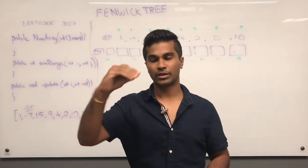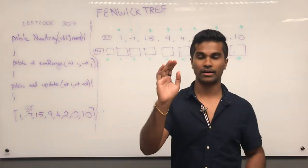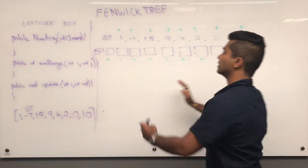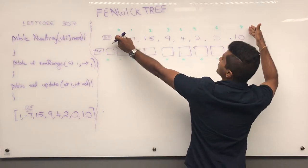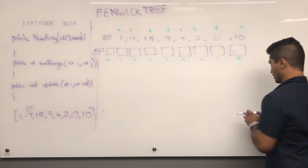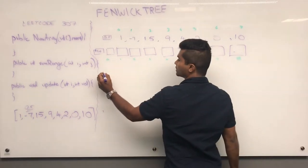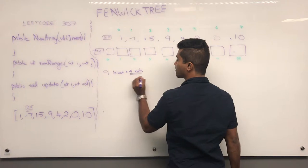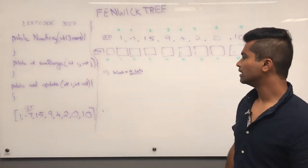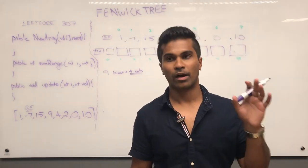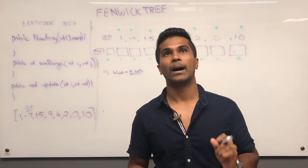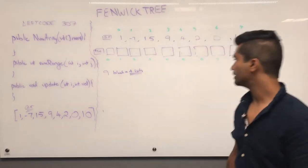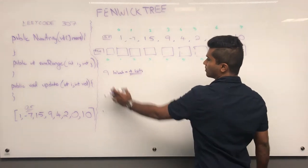When Fenwick introduced this, the trick he used was first by making the Fenwick Tree indexed by 1. We do that by making our Fenwick Tree array one element bigger than the input. So if there are 8 elements, there are going to be 9 spots. 9 blocks are going to be represented by 4 bits. The way I'm going to show you is initialization in O(n) time.